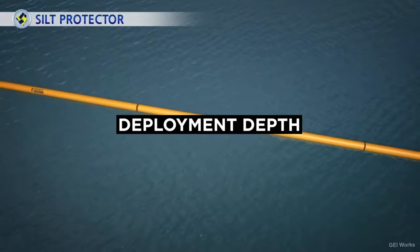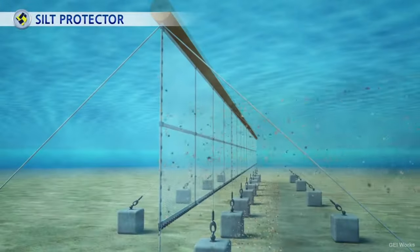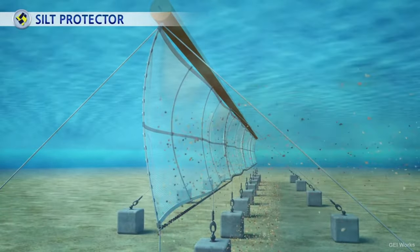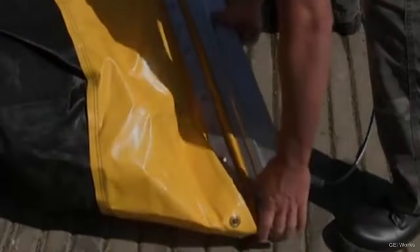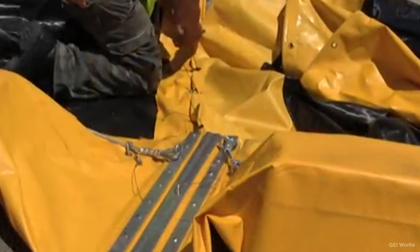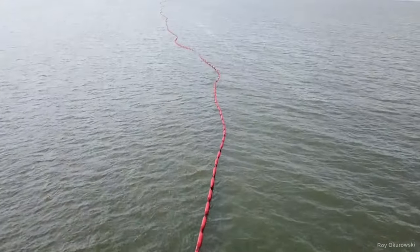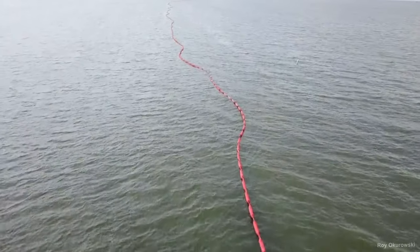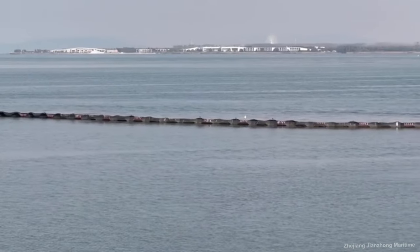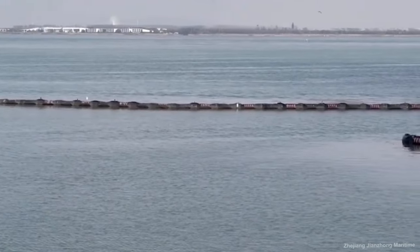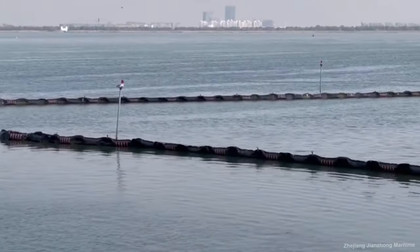Application tips: Deployment depth — ensure the curtain is deployed to the right depth, leaving a gap between its bottom and the seabed to allow for aquatic life movement. Regular monitoring — regularly check for damages or gaps and ensure the curtain is not overwhelmed by sediment loads, which can cause it to become ineffective. Effective anchoring — curtains should be anchored securely to prevent them from drifting, but with enough flexibility to adapt to changing conditions. Consider curtain lifespan — silt curtains are not permanent solutions; they degrade over time and may need replacement or removal after their effective period. Always have a plan for the curtain's end of life.